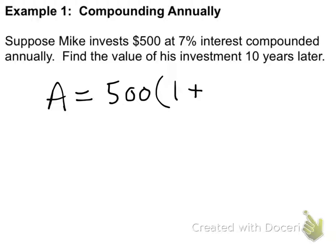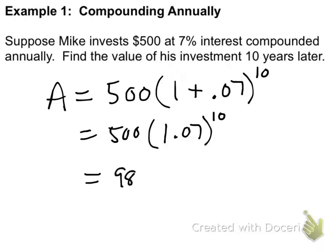7% is the interest rate, so we don't write 7%, though. We write .07, and then N is the number of years. 10 years have passed. So, 500 times 1 plus .07 is 1.07 to the 10th power. So, you get like 983.575 blah, blah, blah. Well, we are talking about money here, so we have to round to two decimal places. So, our final answer would be $983.58. So, very simple. We're just taking the information, we're plugging it in the formula, and we're solving.